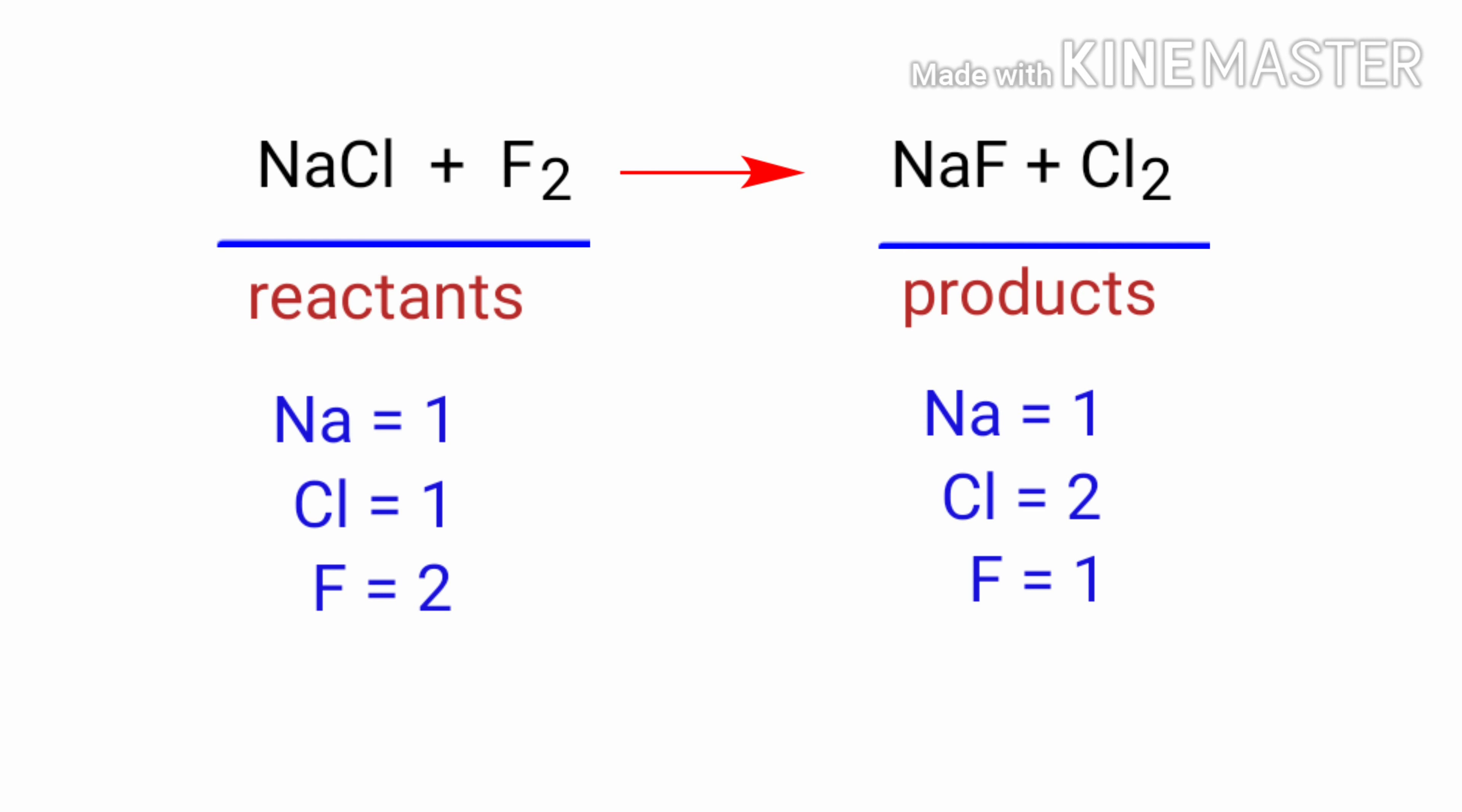In this equation, we need to balance the fluorine atoms first. To do this, we need to put a coefficient of two in front of NaF.